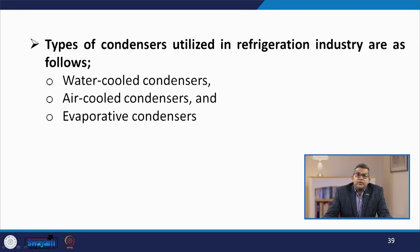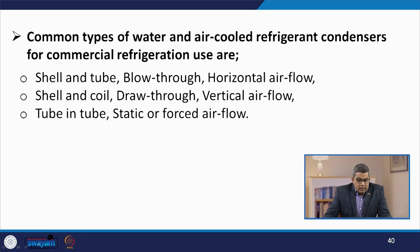The three main types of condensers used in the refrigeration industry are water-cooled, air-cooled, and evaporative condensers. Common types include shell and tube (blow-through, horizontal air flow), shell and coil (draw-through, vertical air flow), and tube-in-tube (static or forced air flow). Condenser selection depends largely on the size of the cooling load, type of refrigerant used, quality and temperature of available cooling water, and the amount of water that can be circulated.